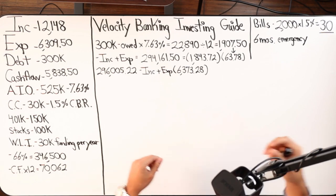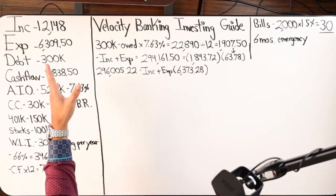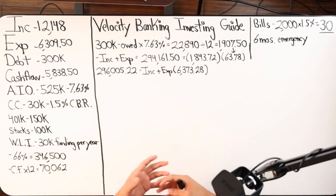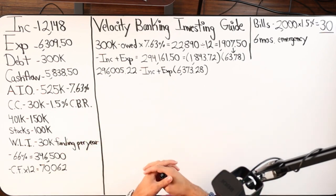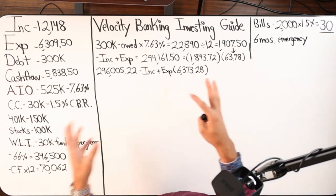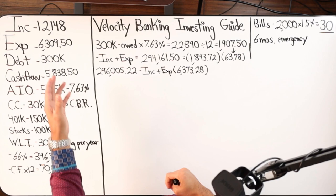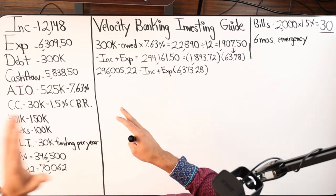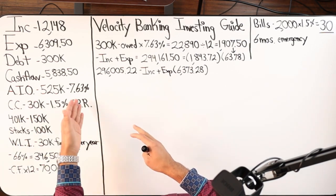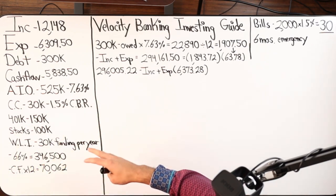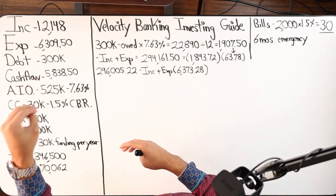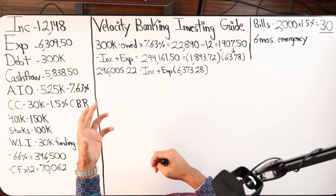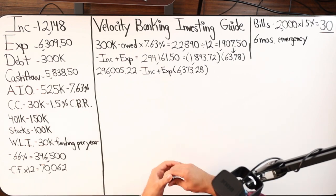Let's start with the four major numbers. We have a client on the board here generating $12,148 a month. Self-employed — they have a career generating $12,148 a month net. Total cost of living — debts, giving, saving, living costs, everything — $6,309.50. Total debt: $300,000. They had more debt before, so they've been doing velocity banking for a while. They acquired their debt tool, which is an all-in-one loan. All of the previous debt has been removed except for the debt inside of the all-in-one loan, which is our debt tool. So $300,000 is what remains in debt. Current cash flow: $5,838.50.